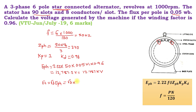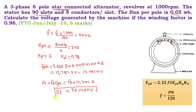Therefore, EL = √3 × 12,787.2, which gives a line voltage of 22.148 kV. This generator generates a voltage of 22.148 kV.